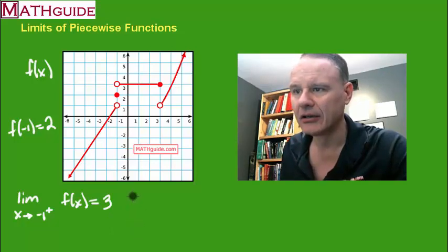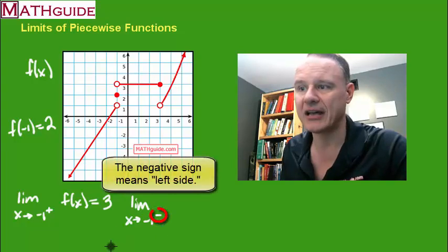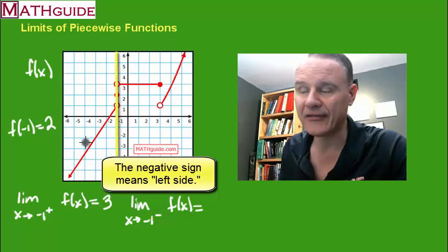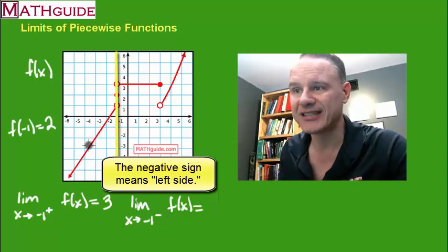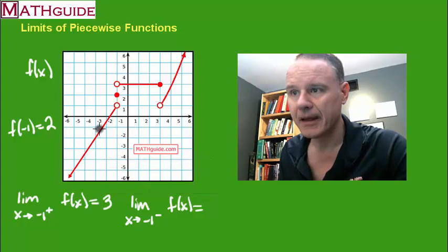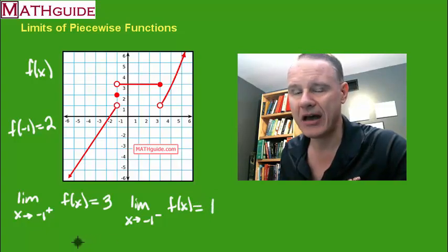Now let's say we want to find the limit of the same function, but approach negative 1 from the left side. Here's x equals negative 1 — I'm on the left side of it, so I must be on this section of the curve. If I'm a little bug traveling towards this value, I'm headed towards this point, and I'm at a y value equal to 1.